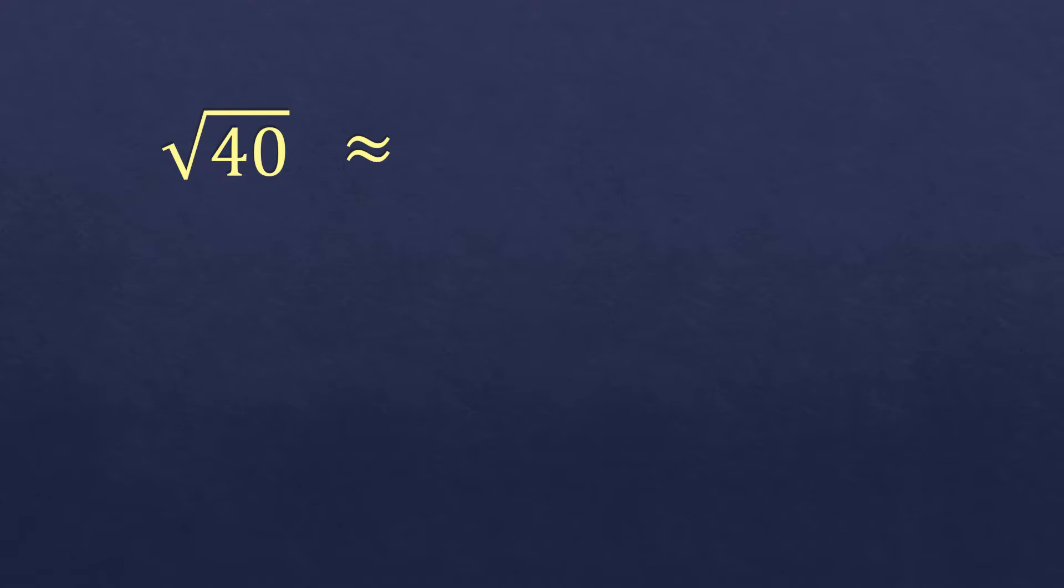If you say 7, 7 squared is 49, that is more than 40, so we'll move to lower than 7, which is 6. So 6 squared is 36. That is closest, but not more than 40. So the answer of the square root of 40, it must be around 6 point something.